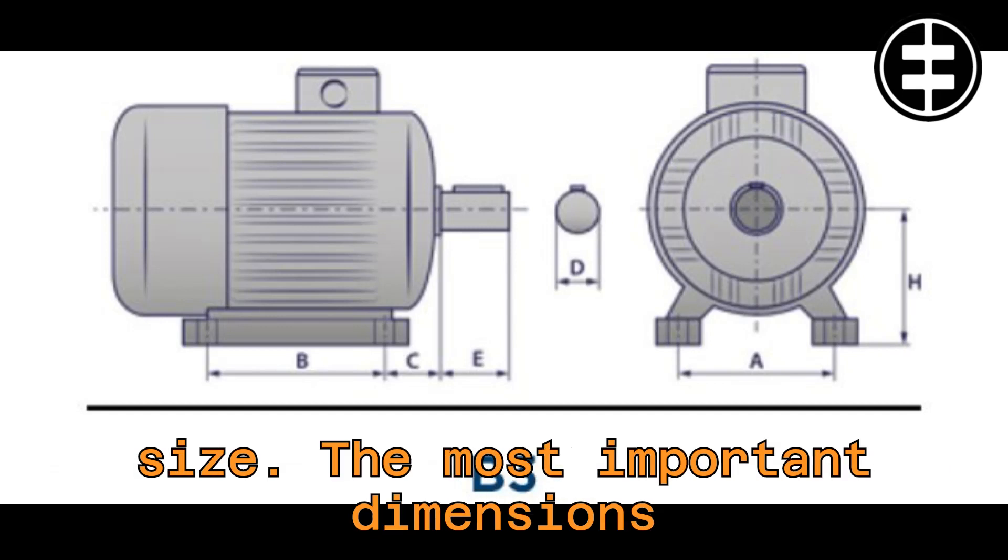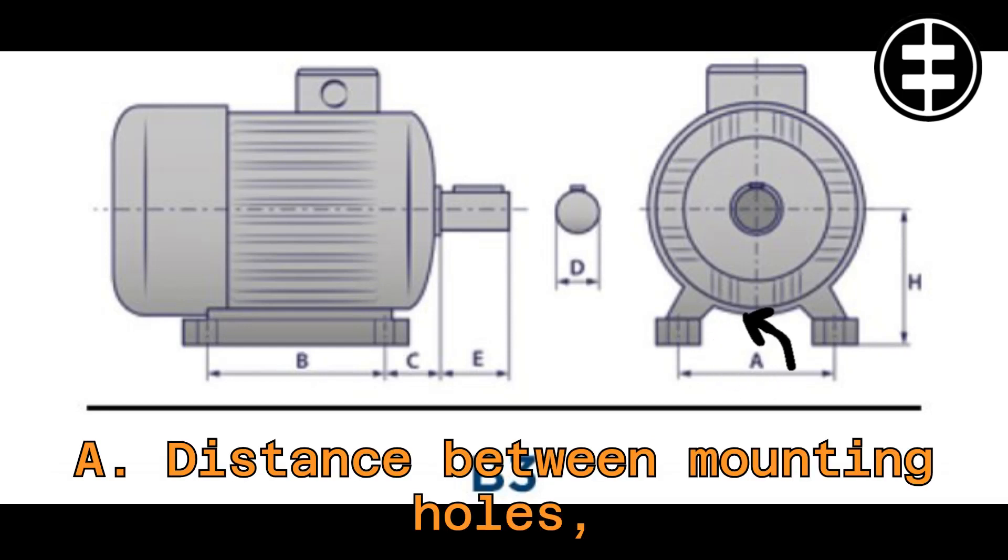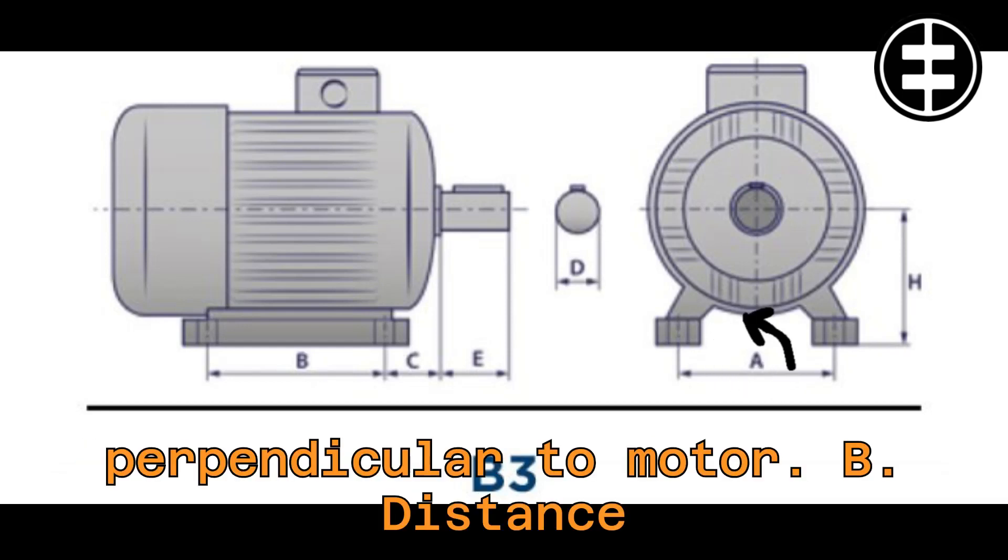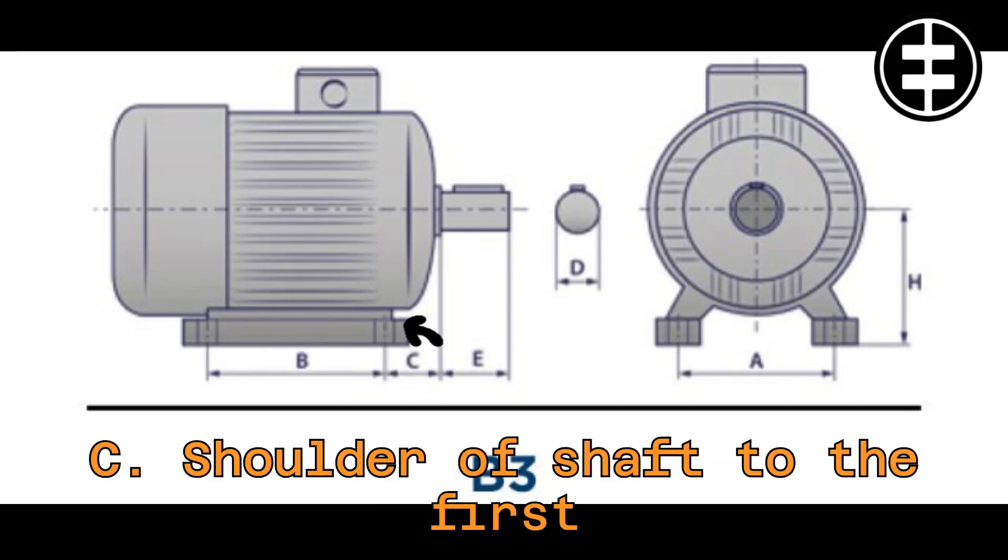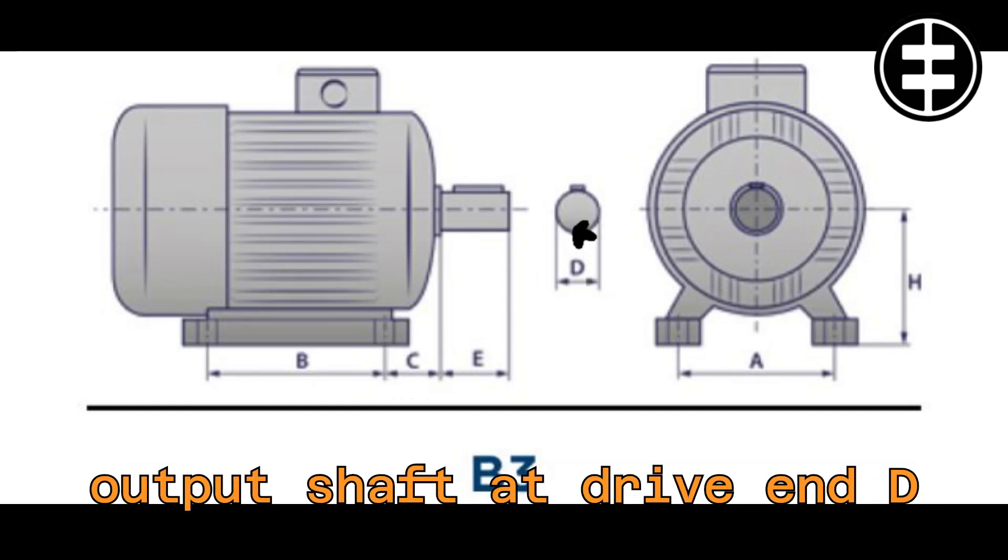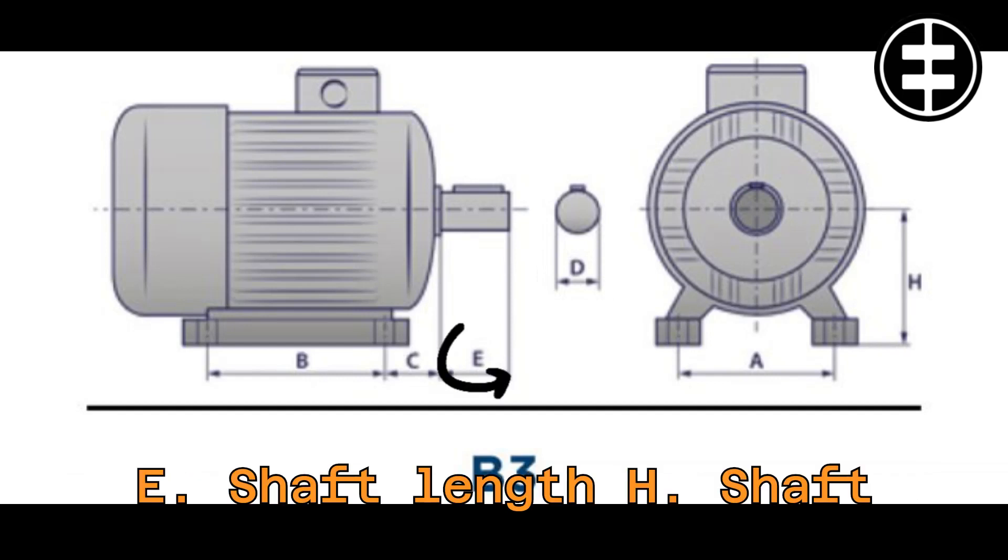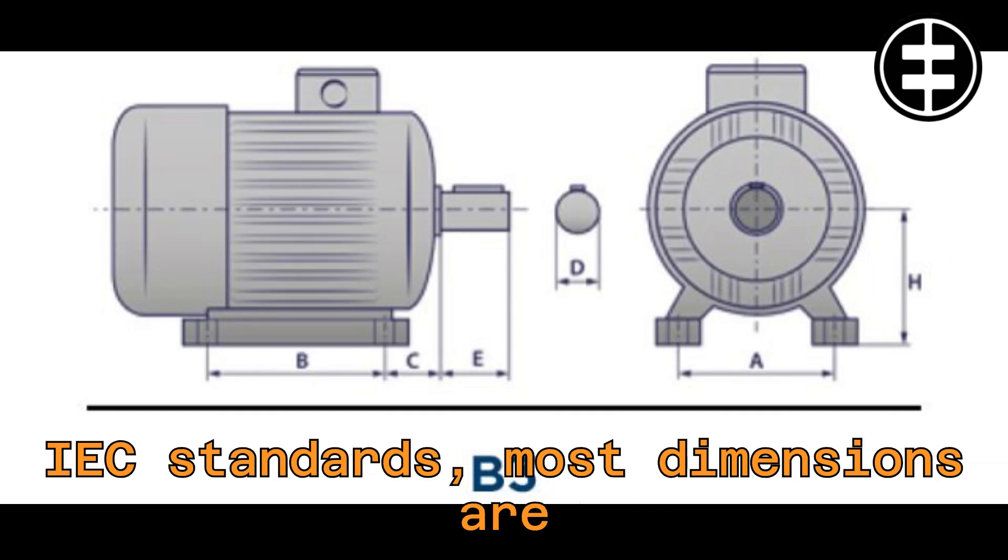The most important dimensions according to the IEC standard are: A. Distance between mounting holes perpendicular to motor. B. Distance between mounting holes parallel to motor. C. Shoulder of shaft to the first mounting hole. D. Diameter of output shaft at drive end. E. Shaft length. H. Shaft height.